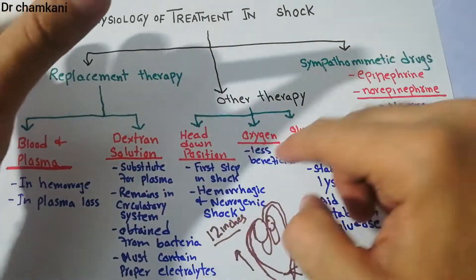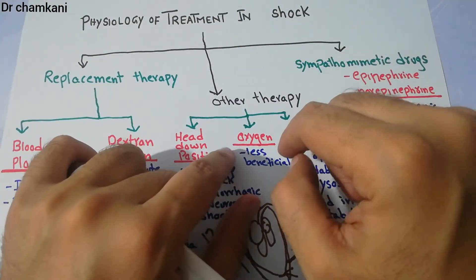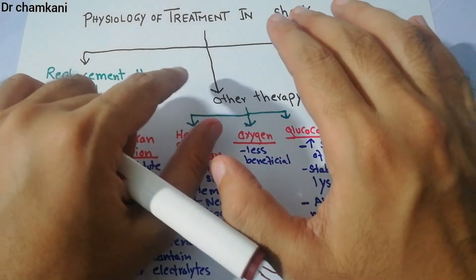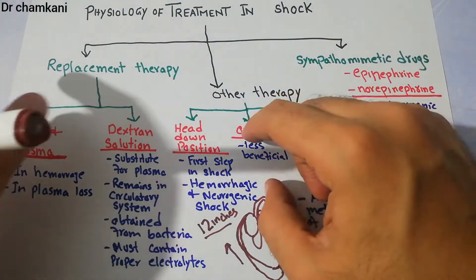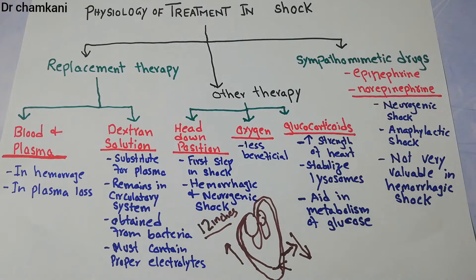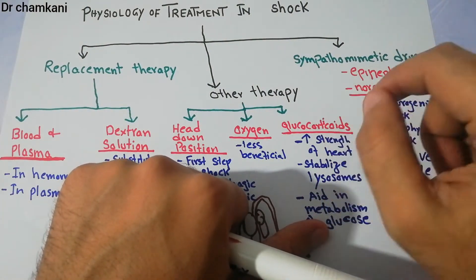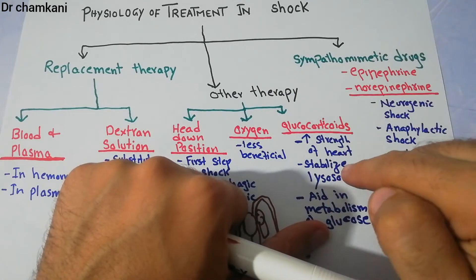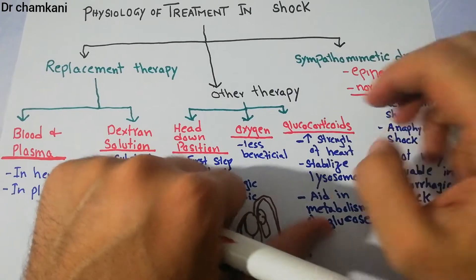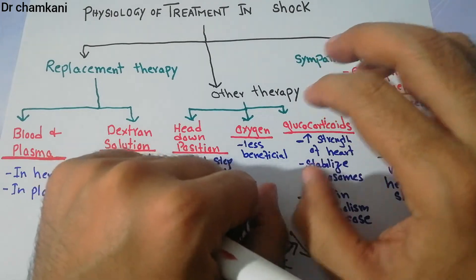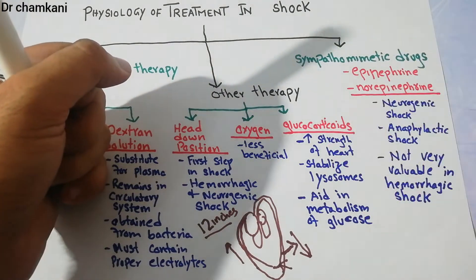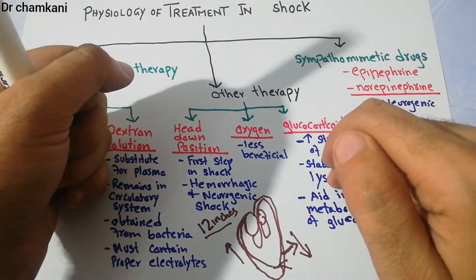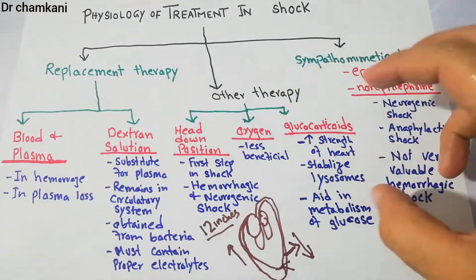Oxygen is also a therapy to consider; it is most importantly considered in septic shock but is less beneficial in neurogenic or anaphylactic shock, because the main problem is the decrease in blood or plasma. Glucocorticoids or corticosteroids basically increase the strength of the heart, stabilize the lysosomes, and aid in the metabolism of glucose. They may be useful in some kinds of shock depending on the severity — for example, when we want to stabilize lysosomes or strengthen the heart — but not in all kinds.